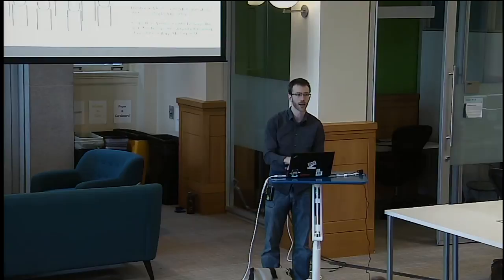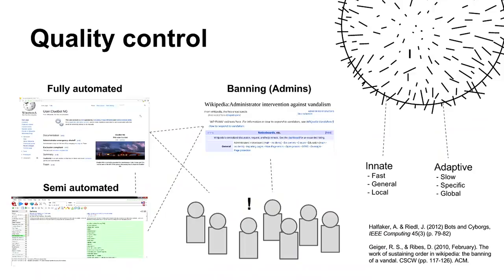I like to go back to the biological metaphor here, because this looks a lot like an animal immune system. It has innate characteristics — reverting vandalism as it happens, fast, general, and local to the vandalized page. And we also have an adaptive side: administrators banning people. It's slow, specific to the editor who's the problem, but has global effects. Once you ban somebody who's vandalizing Wikipedia, the vandalism stops — like getting immunity to a particular virus.